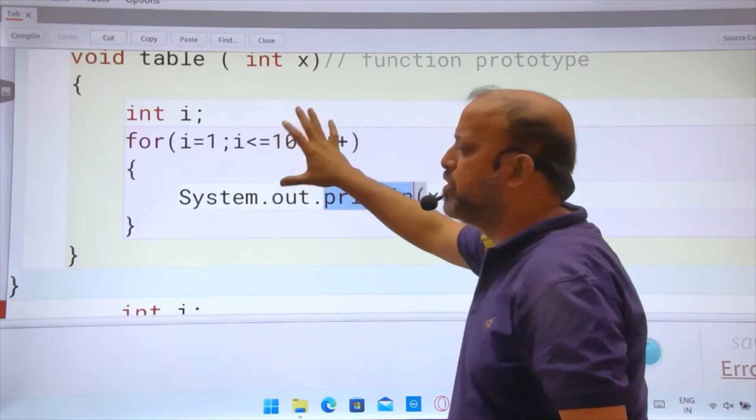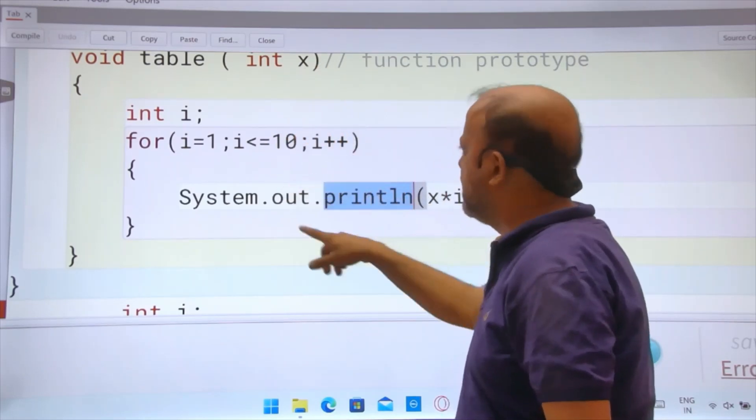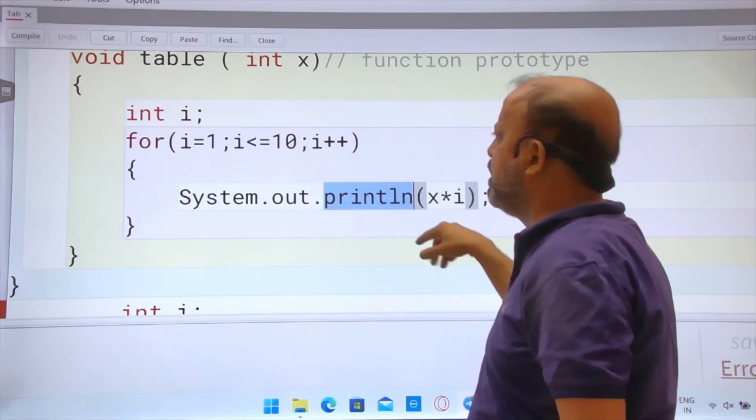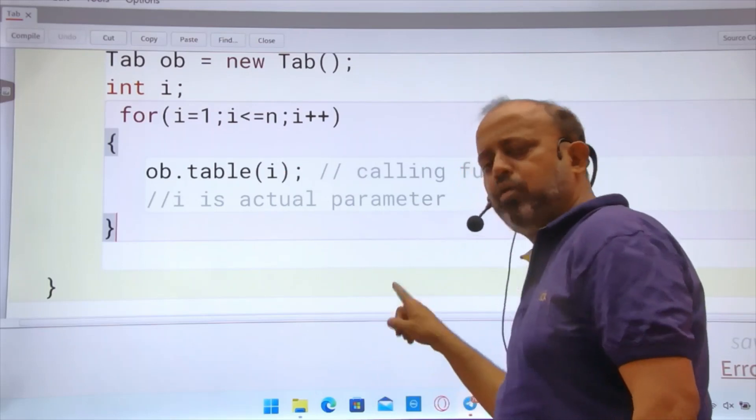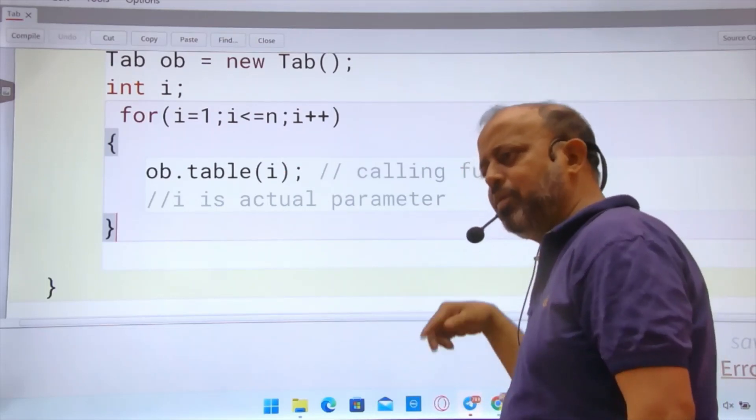This function is giving you table of x. Loop runs till 10, x into i. So when you are calling it here, when you are passing i, i one goes there, one sits there, one's table, two sits, two's table. Like this it will continue.